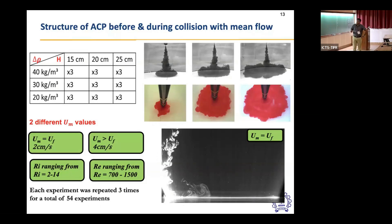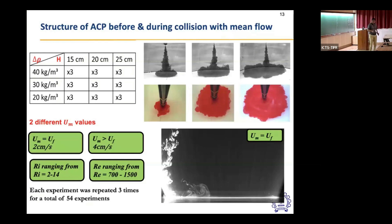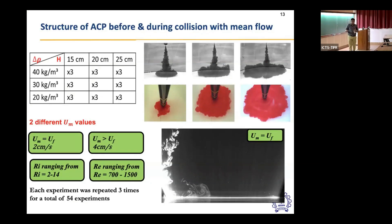The experimental parameters included varying the buoyancy flux — the initial delta-rho in the system — and the source height. We worked in a range of Richardson number from 2 to 14 (low to high) and Reynolds number from 700 to 1500. Each set of experiments was repeated three times, and two different mean flow velocities were used: one where mean flow equals the frontal velocity, and another where the mean flow is much higher than the frontal velocity.